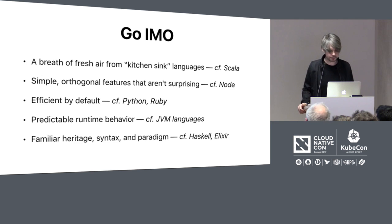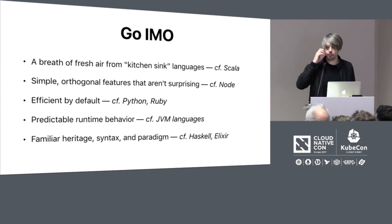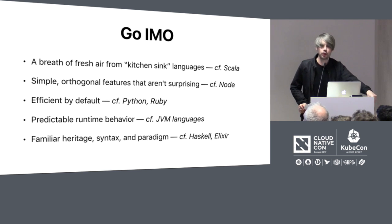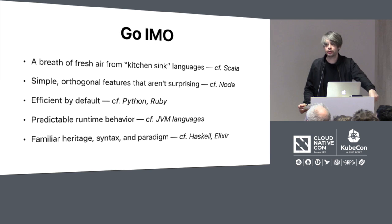It is a garbage collected language, which was decided very early to be an important usability handle. This does mean it's not totally suitable for everything C is suitable for, but on balance the Go authors decided this is the right move. It looks like C, has a big standard library — a Python-esque standard library for lots of things you need in the modern world — and it has baked-in concurrency.